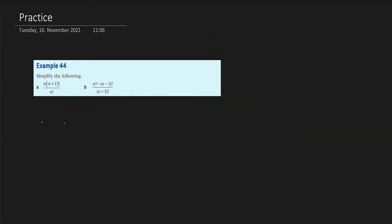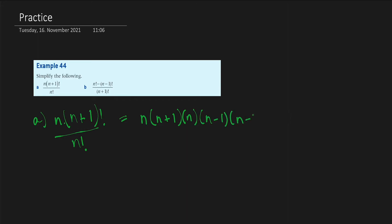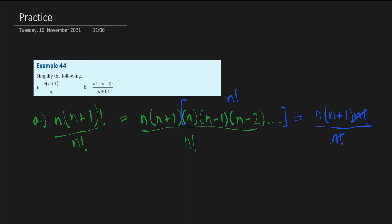Now we will do some practice problems in order to improve our overall understanding of the topic. In this question we have n times (n+1) factorial divided by n factorial. This can be rewritten as n times (n+1) times n times (n−1) times (n−2) and so on, over n factorial. You might notice that this part is basically just n factorial because it is the product of all positive integers up till n. So we can rewrite that as n times (n+1) times n factorial over n factorial, and the n factorials cancel, which leaves us with n times (n+1).